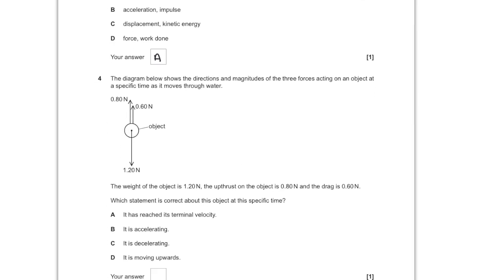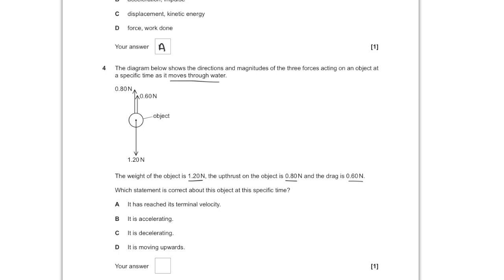For question number four, we are given the directions and magnitudes of three forces acting on an object moving through water: weight is 1.2 newtons, upthrust is 0.8, and drag is 0.6. Terminal velocity is reached when forces are balanced, but here the resistive forces altogether add up to 1.4 newtons and the downward weight is 1.2 newtons — so it's not at terminal velocity and not accelerating. In fact it will be decelerating, because as it goes down it is slowing down — the resistive forces are greater than the downward force. So C is the answer.